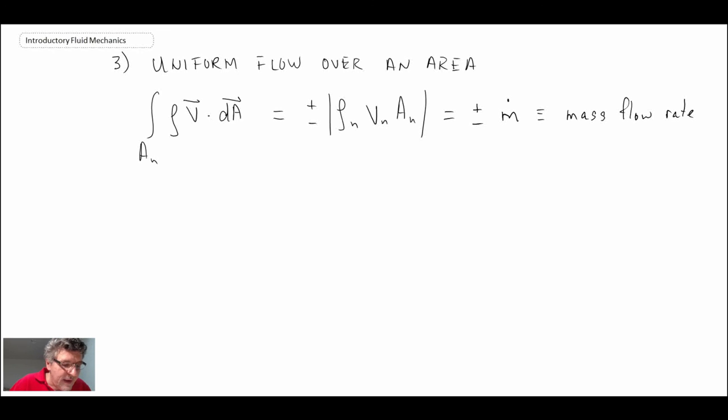And be careful, when we say m dot, that is not dm by dt, the time derivative of mass. m dot is not the same as the time derivative. What it reflects is the mass flow rate. So this would be in units of kilograms per second going across a boundary. And so that's what that is referring to.